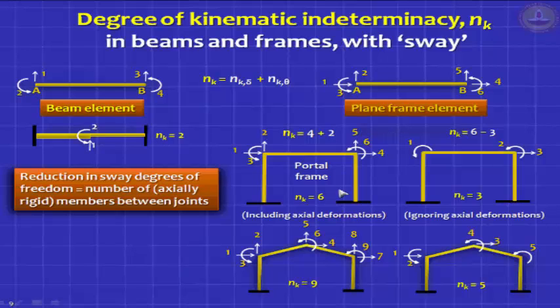For a plane frame element, if you take this example of a simple portal frame, you will find that at every joint you can have 2 translations in 2 orthogonal directions. So if you take the Cartesian coordinates, delta_x and delta_y. Similarly, at this joint also you have 2 translations. So you have 4 translations. So n_k_delta is 4, and theta at this joint and theta at this joint are 2 rotations. So you have 6.